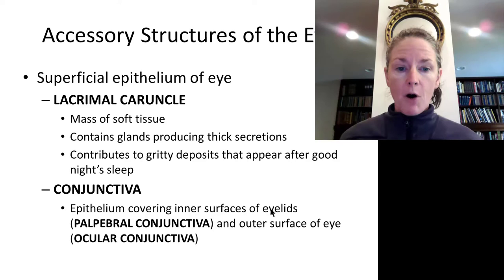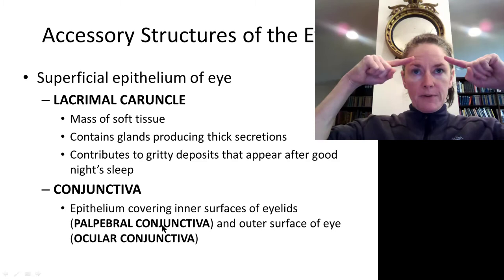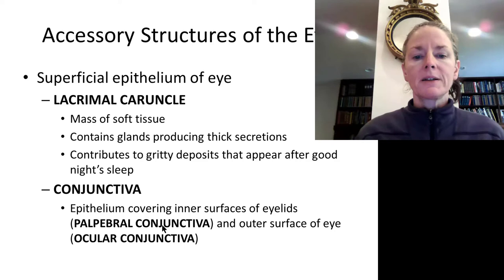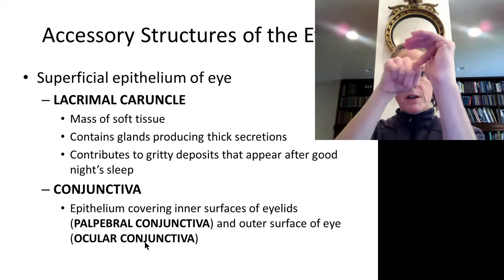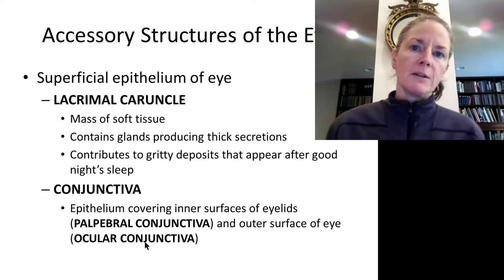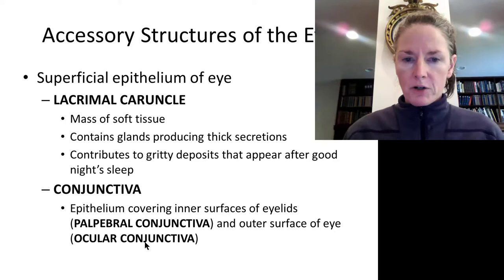The conjunctiva is the epithelium covering the inner surface of the eyelids and the outer surface of the eyeball. The palpebral conjunctiva lines the inside of the eyelid, and it folds back to become continuous with the ocular or bulbar conjunctiva, which covers the surface of the eye. Where it arches back making a vault-like shape, we have a structure called the fornix.